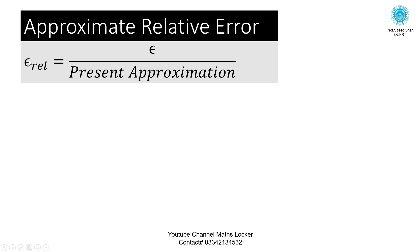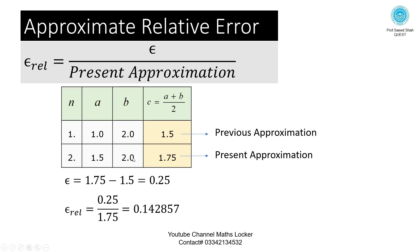Approximate relative error: epsilon_rel = epsilon divided by present approximation. Taking the values from the table: epsilon = 0.25, present approximation = 1.75. Substituting gives the approximate relative error.